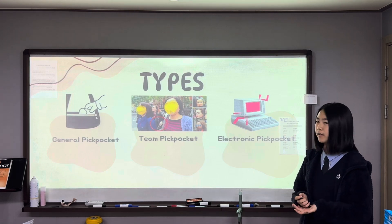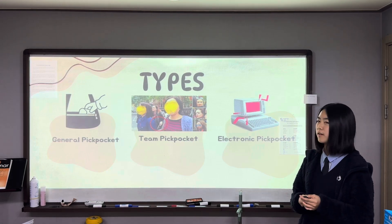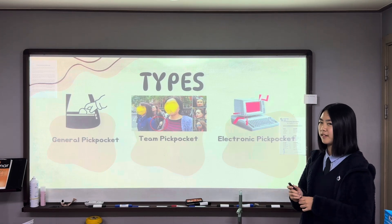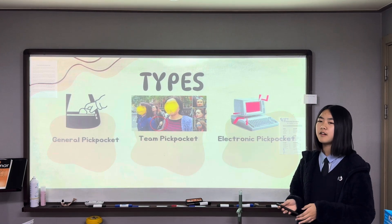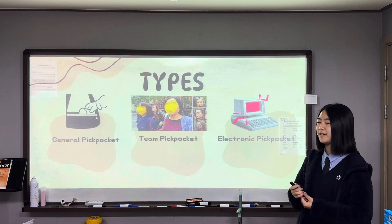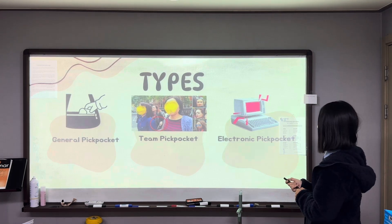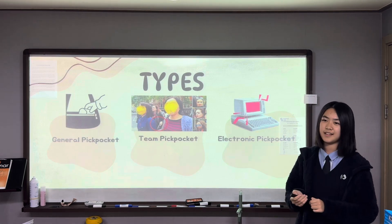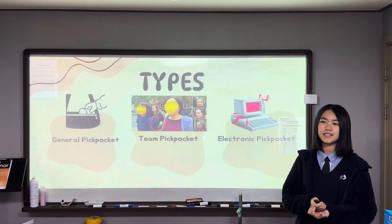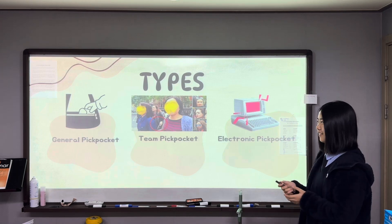General pickpocket is what I mentioned before. However, pickpockets do not always operate alone. They may work in teams to distract the victim while someone unseen removes the item and then blends back into the crowd. The electronic pickpocket is a type of theft where criminals steal personal information without any physical contact.